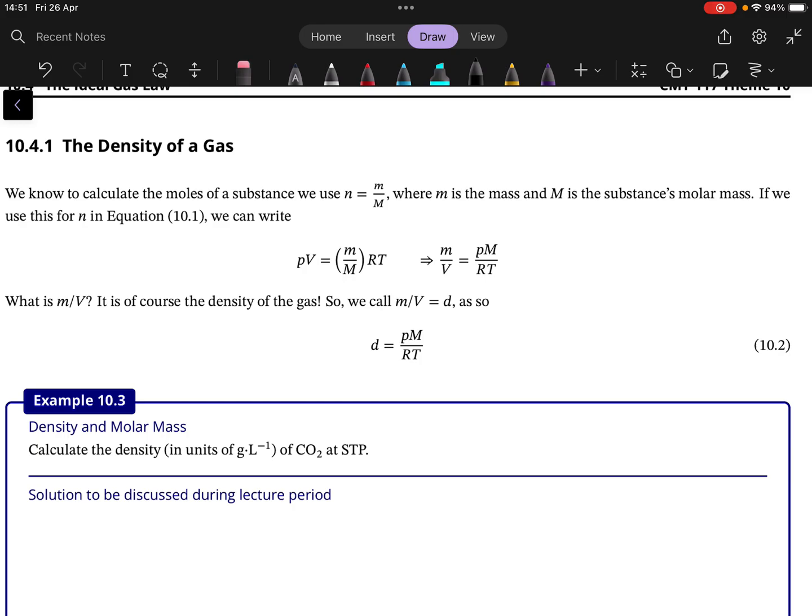Something else that's useful that comes from the ideal gas law is you can calculate the density of a gas. Now if we recall that the number of mole is equal to the mass divided by the molar mass, and we then substitute in that n in PV is equal to nRT.